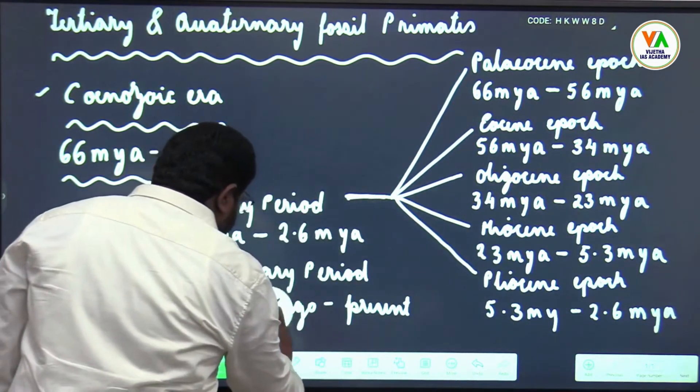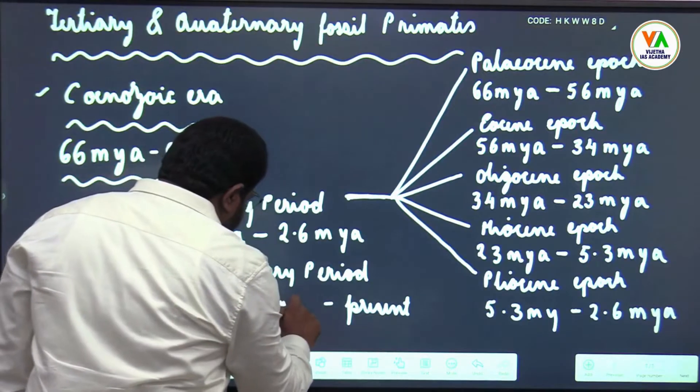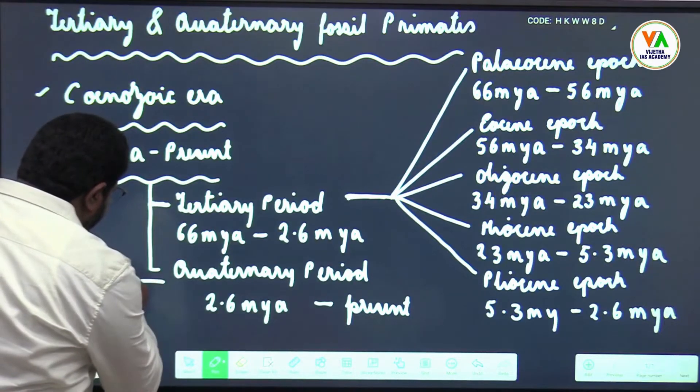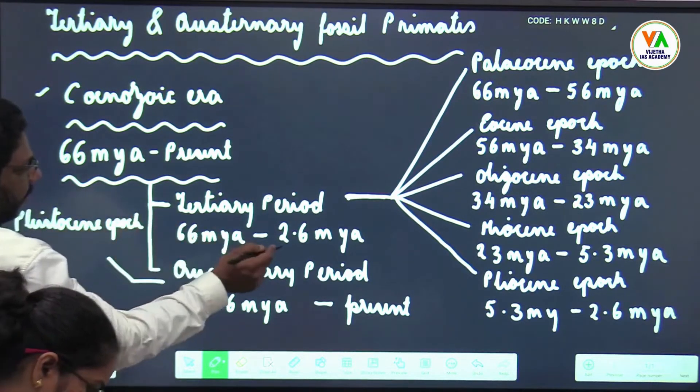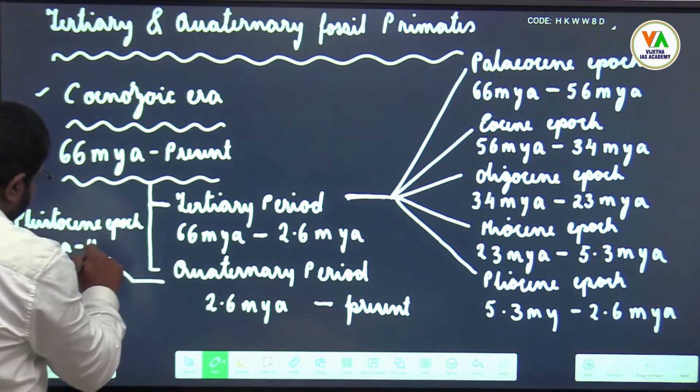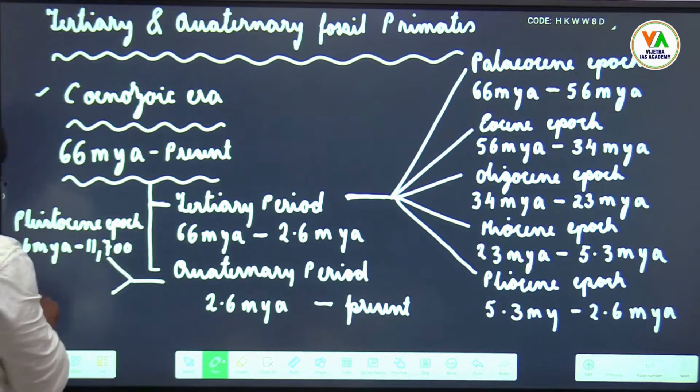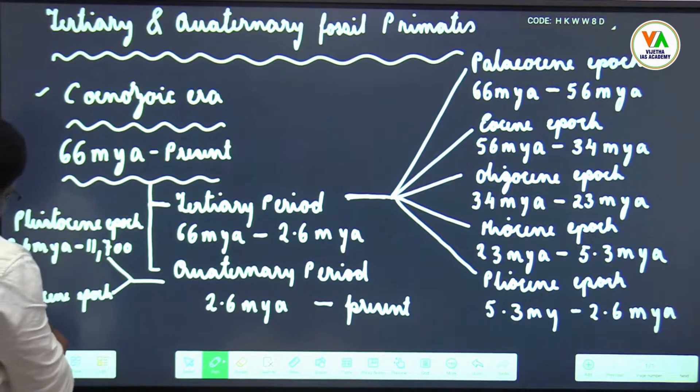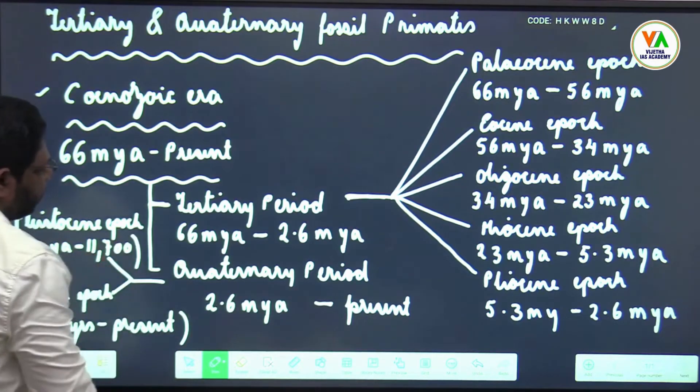So this becomes 2.6 million years ago to present. Now in Quaternary period you have two epochs: Pleistocene which is 2.6 million years ago to 11,700 years ago, and at present we are in Holocene epoch which is 11,700 years to present. This is approximate time duration.